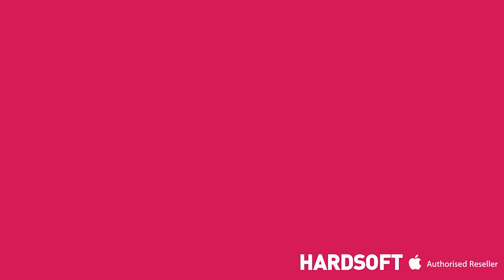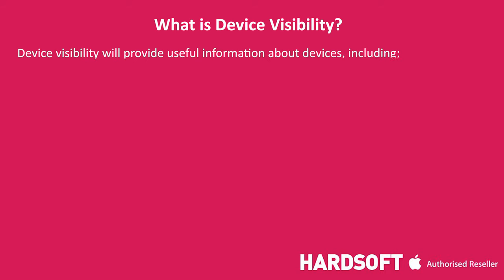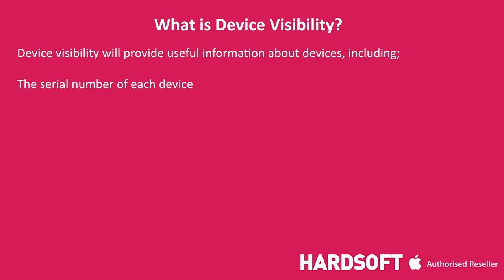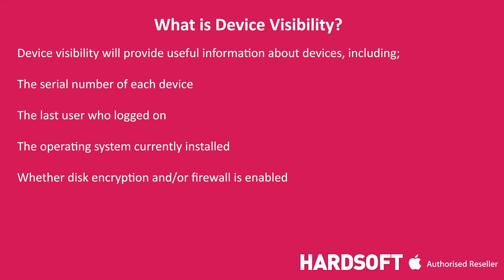With device visibility, it will show you the serial number of the device, the last user logged on, the operating system version that's installed, if disk encryption is enabled, if firewall is enabled. It will also tell you if the hard disk is full up, so if the user is having issues, you can see straight away.